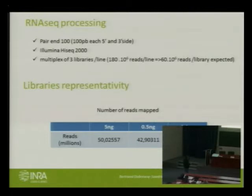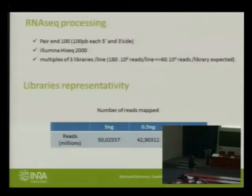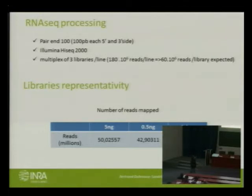For RNA-seq processing, we did paired-end 100 sequencing on an Illumina HiSeq 2000 and multiplexed the libraries by three. We expected coverage of more or less 60 million reads, which is more or less what we got. The 0.1 nanogram library did not fail — we do have that library, and we got coverage of more or less 50 million reads, which is nice.